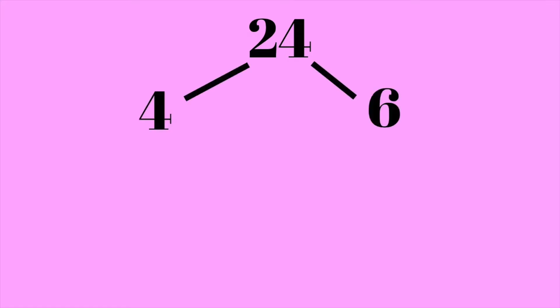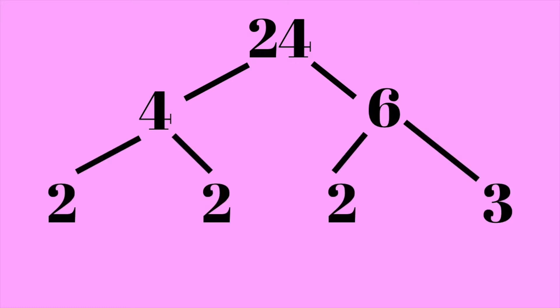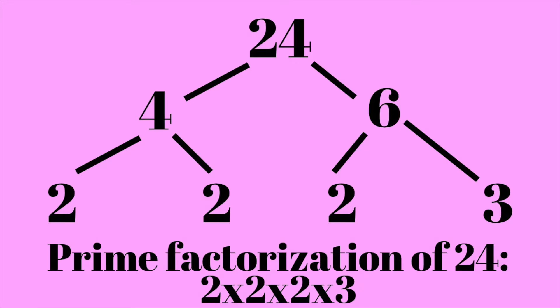So if we have a number like 24, we know that 24 is the product of 4 and 6. As we said before, 4 and 6 are not prime numbers, so 4 times 6 equals 24. For each of these numbers we can break them down even more: 4 is 2 times 2, and 6 is 2 times 3. So we add those branches in and we're left with 2, 2, 2, and 3 — all prime numbers — which means we have finished our prime factorization. So 2 times 2 times 2 times 3 is the prime factorization of 24.